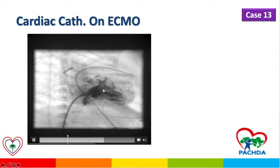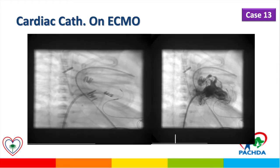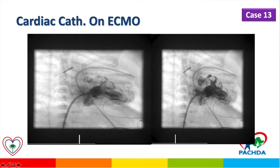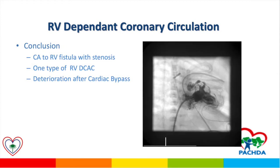Injection in the right ventricle shows multiple connections with the coronary artery, with multiple stenoses in the course of the coronary artery. Still images confirm the same finding with multiple stenoses. Another view shows a fistula between the right ventricle and the coronary artery with stenosis. This patient has RV-dependent coronary artery circulation and deteriorated after cardiac bypass.